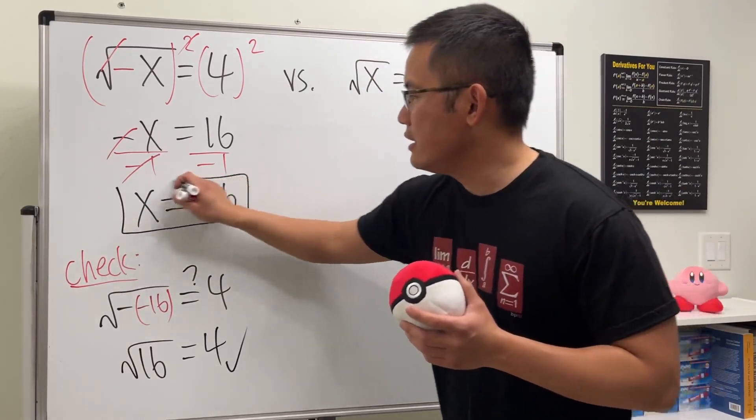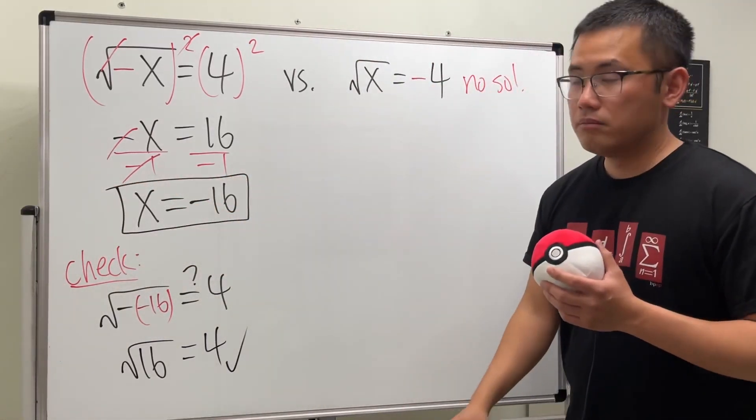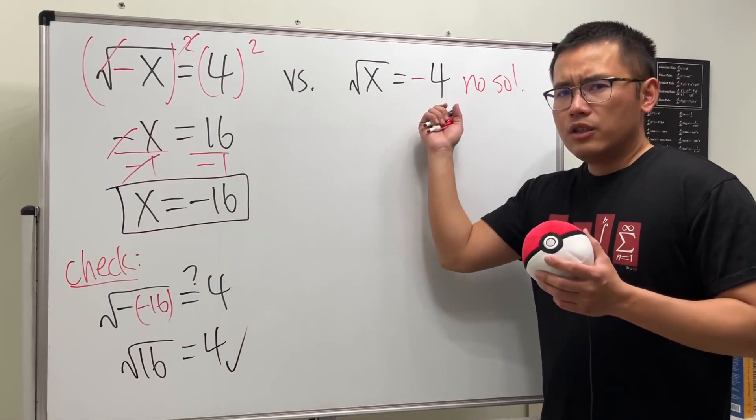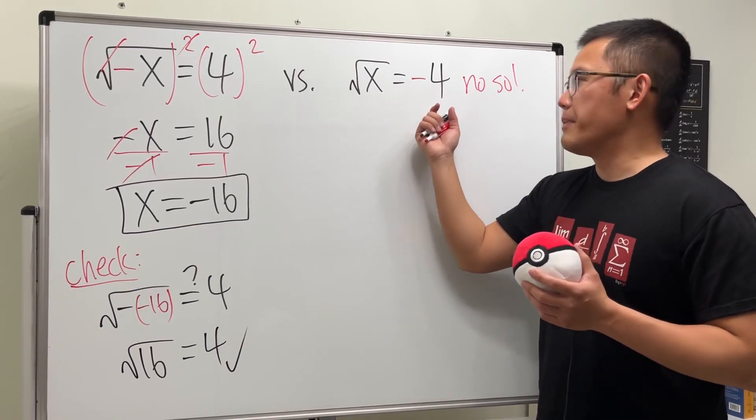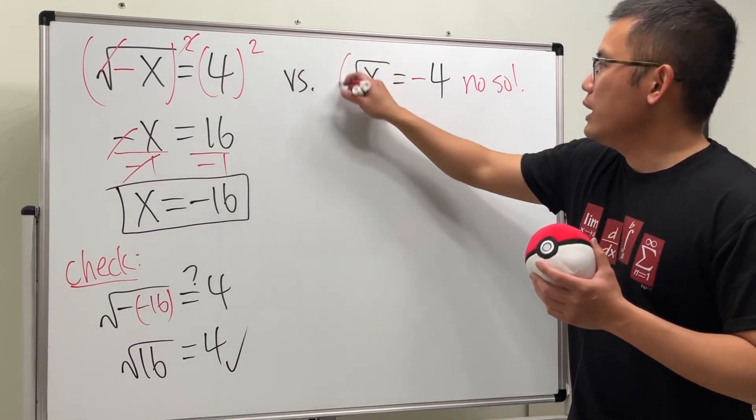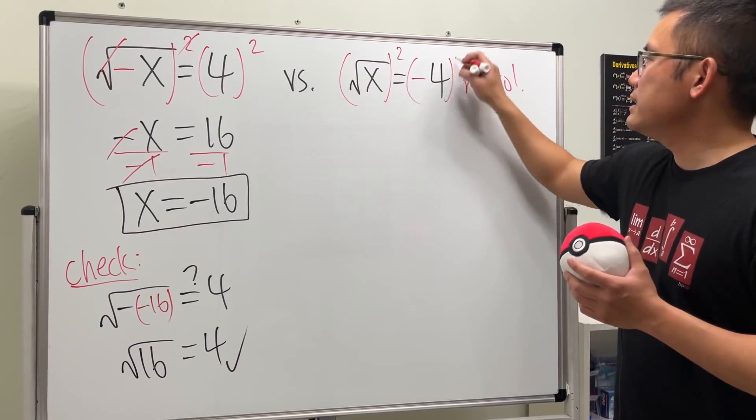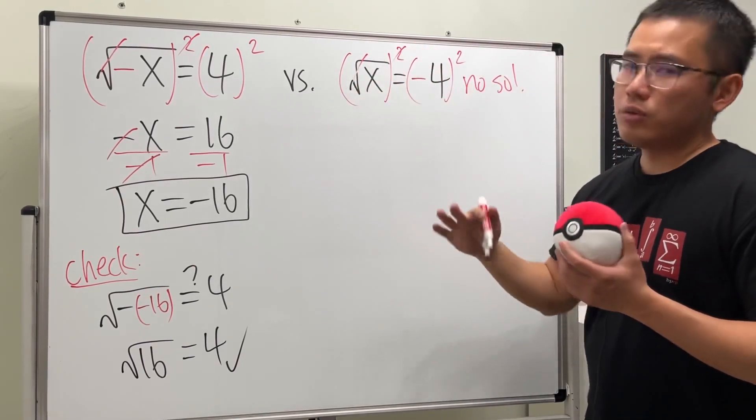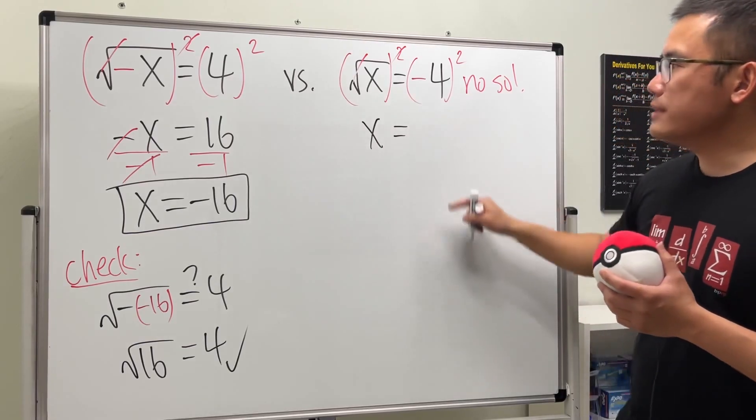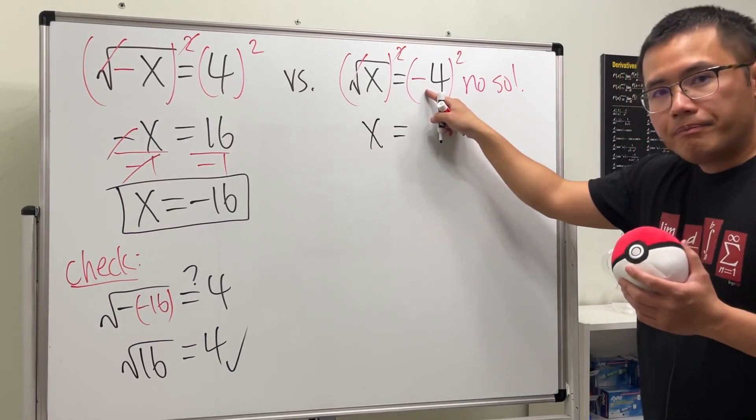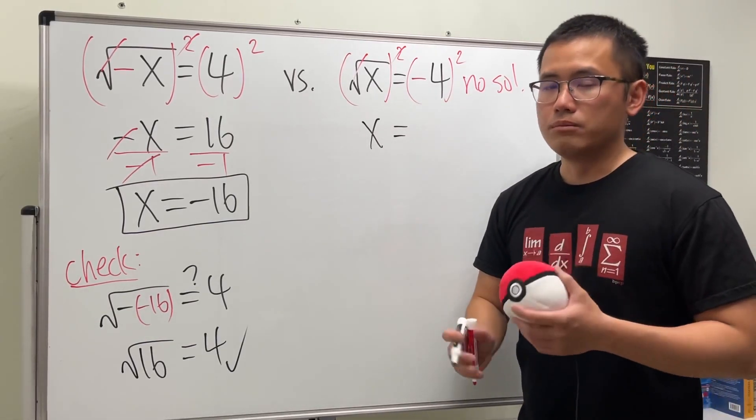But you might be wondering how come we cannot just do the same thing here. Well, I will show you. Go ahead, suppose we square both sides. You see this and that cancel, and then we still get x equals this right here, which means negative 4 times negative 4, so we have positive 16.